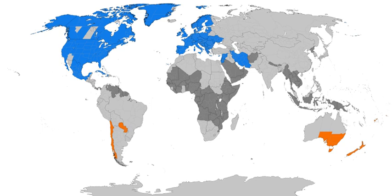North and south of the tropics, daylight lasts longer in summer and shorter in winter, with the effect becoming greater the further one moves away from the tropics. By synchronously resetting all clocks in a region to one hour ahead of standard time, individuals who follow a year-round schedule will wake an hour earlier, begin and complete daily work routines an hour earlier, and have available to them an extra hour of daylight after their workday. However, they will have one less hour of daylight at the start of each day, making the policy less practical during winter. Proponents argue that most people prefer a greater increase in daylight hours after the typical 9-to-5 workday.